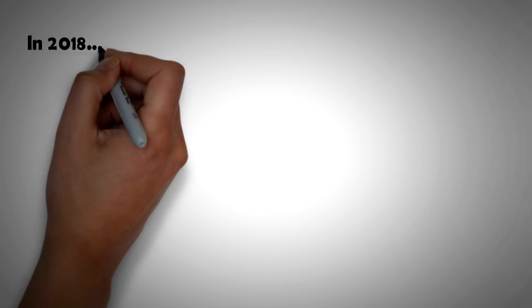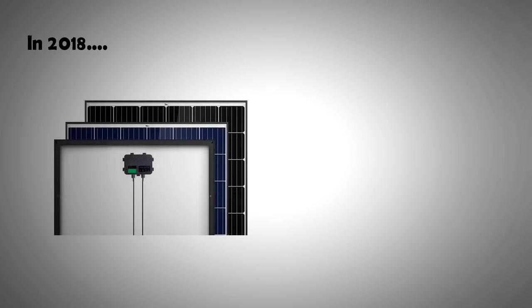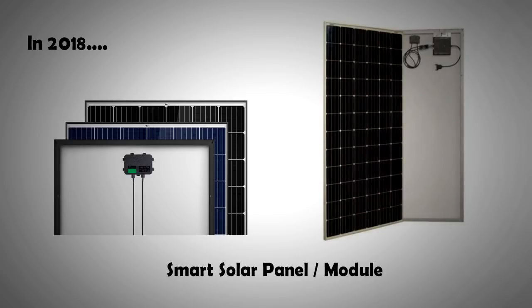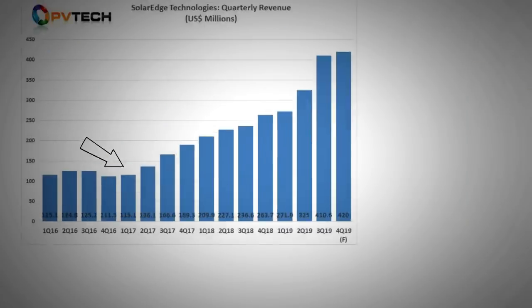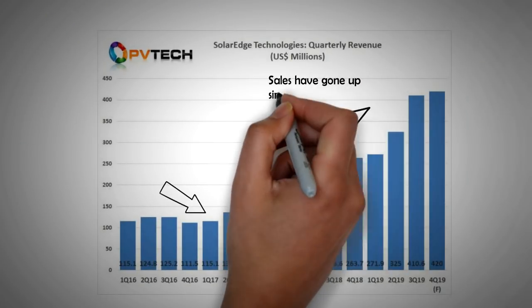In the year 2018, smart solar panels started appearing in the market. These were panels that were sold with SolarEdge's power optimizer embedded at the back. The cost for them was lesser than the two items purchased separately. Panasonic, Canadian Solar, and JA Solar are some of the brand names that are producing smart modules.